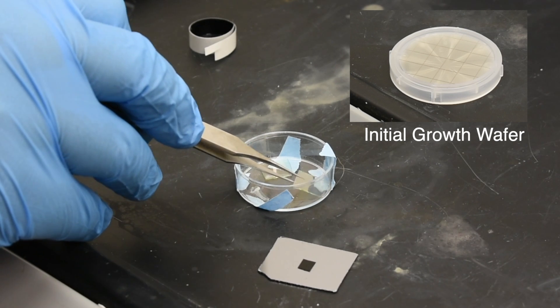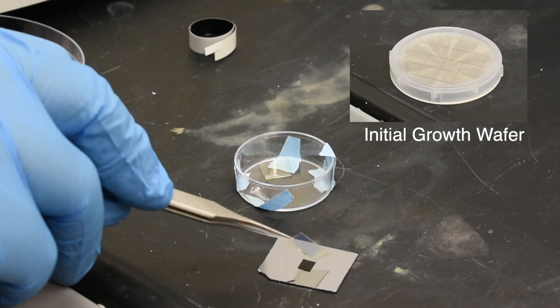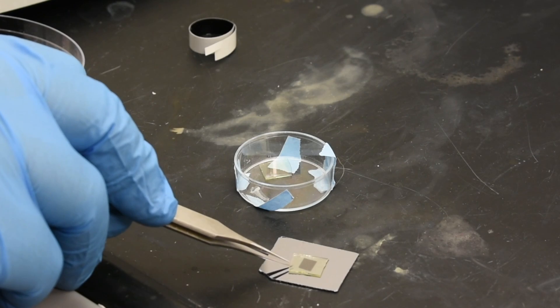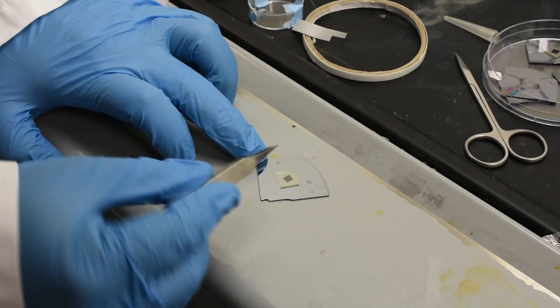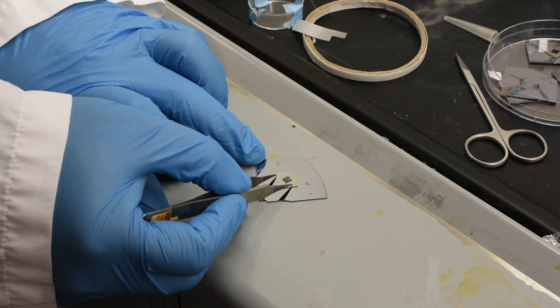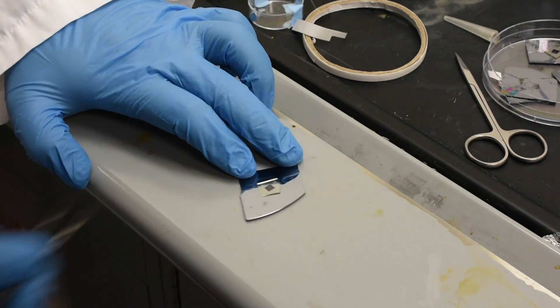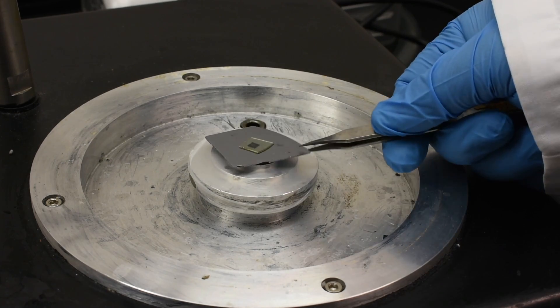Here, a piece from our initial growth substrate, molybdenum sulfide on sapphire, is being placed onto a piece of silicon wafer with a small piece of double-sided tape attached. After pressing our initial growth wafer piece firmly to the silicon wafer, the sample is moved to the spin coater.